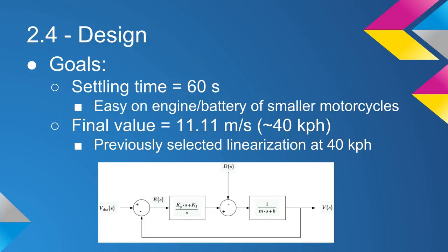For designing the controller for our system, we set two goals. We chose a settling time of 60 seconds to be easy on the engine and battery of smaller motorcycles and to reduce rider strain. We also set a final value of 11.11 meters per second, which is approximately 40 kilometers per hour.